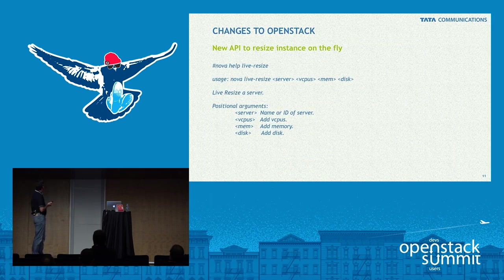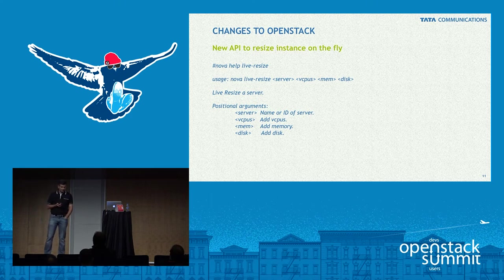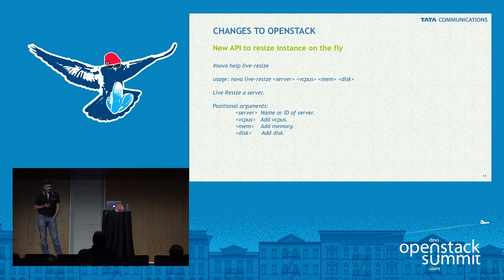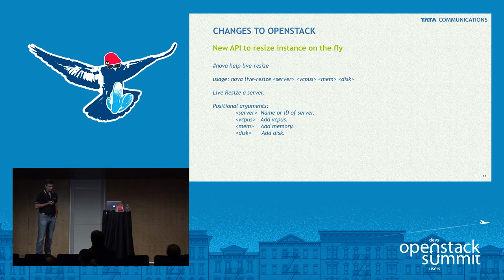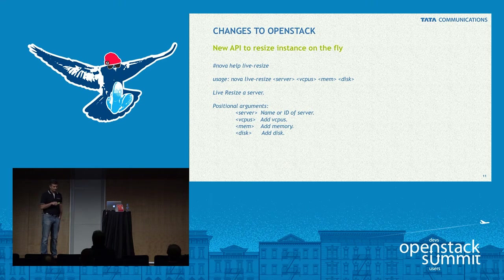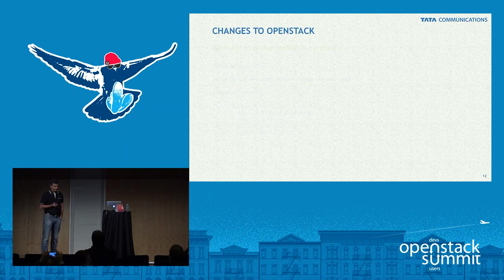What we have changed: we've added a new API to resize an instance on the fly — the live resize command. This live resize makes use of hypervisor functionalities for dynamically increasing memory and vCPUs. KVM has this feature since version 1.2. The command takes three arguments for the server — vCPUs, mem, or disk. Disk is not yet implemented but we've implemented vCPUs and memory.